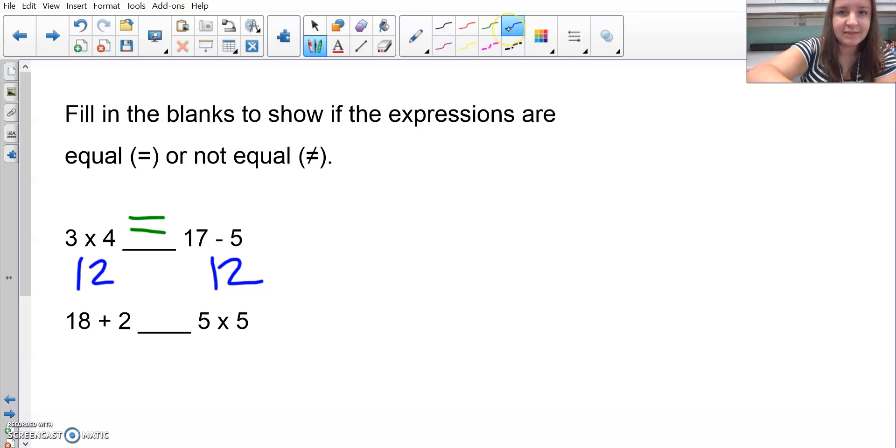Over here, I have 18 plus two, which is 20, and I have five times five, which is 25. Those are not equal to each other. So the way I would express that is with an equal sign with a slash that goes through it.